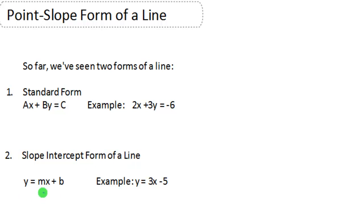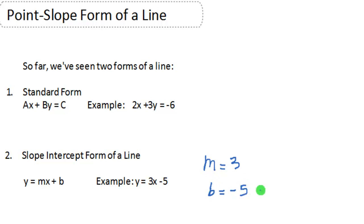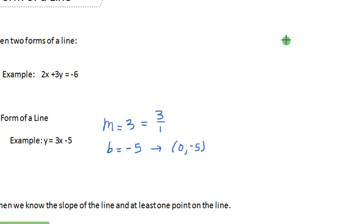The slope intercept form of a line is y equals mx plus b. Here is our example: y equals 3x minus 5, and we like this form because it gives us a lot of information about the line. The coefficient of x is our slope, which is 3, and the constant, negative 5, is our y-intercept. So we know that our line goes through the point 0, negative 5, and once you have one point and the slope you can pretty much graph the line.